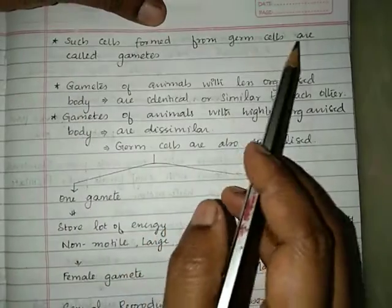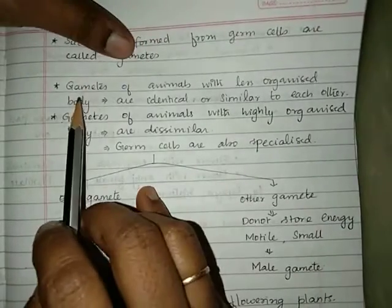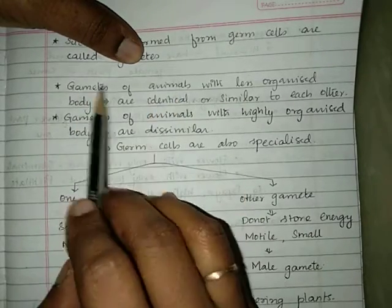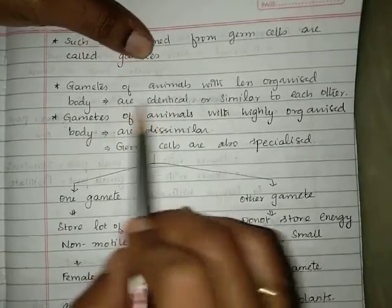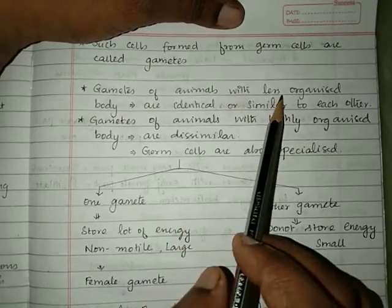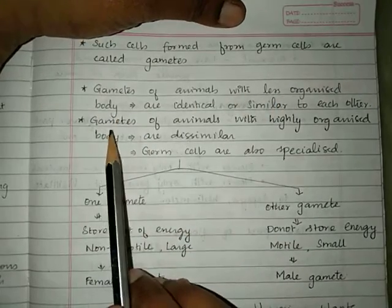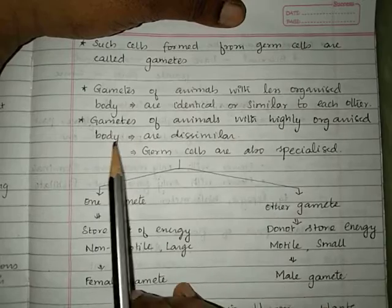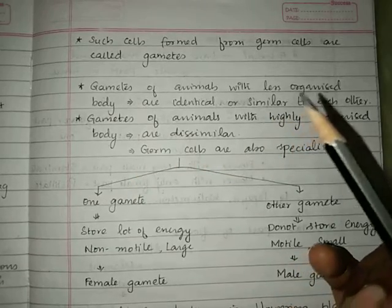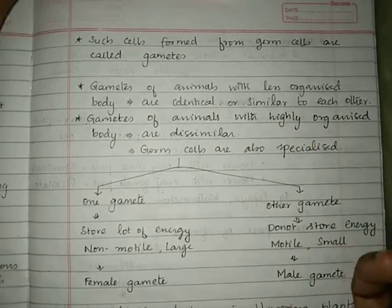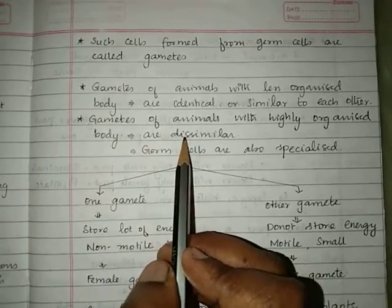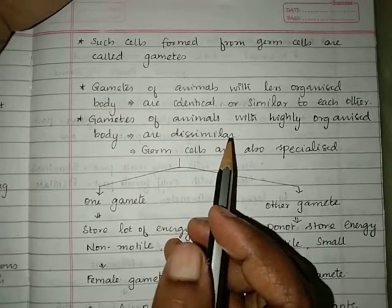Cells formed from germ cells are called gametes. In animals with less organized body structures, the gametes are going to be identical or similar to each other — we will not be able to differentiate which is the male gamete and which is the female gamete. However, if the animals have highly organized body structures, like mammals such as humans, cows, goats, cats, and dogs.